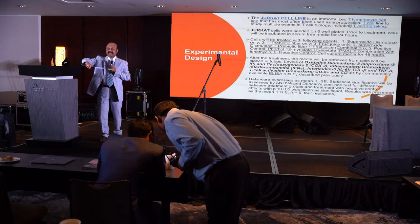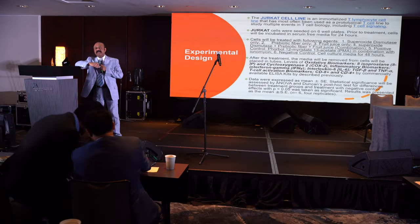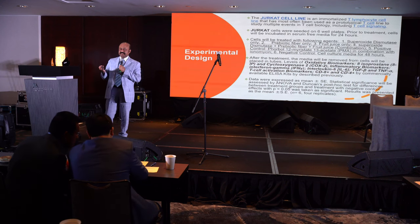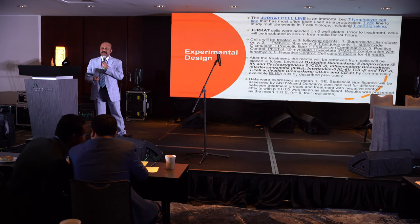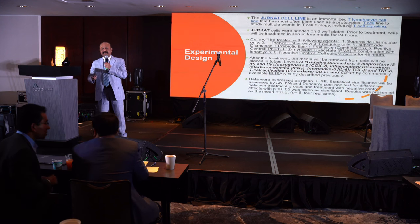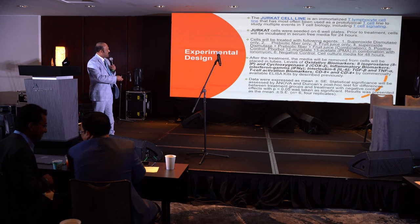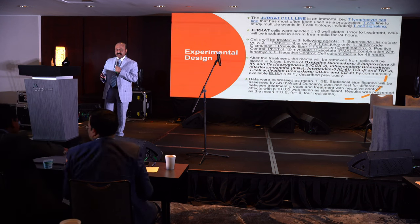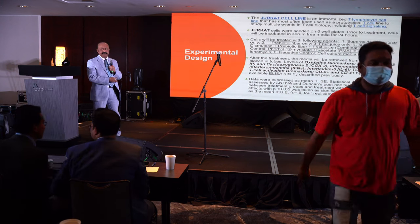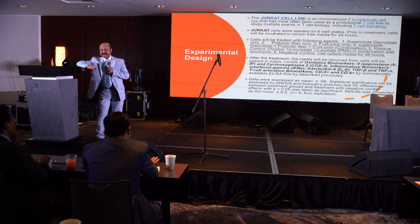I used the Jurkat cell line, which is the T cell line. In my lab, we induced these Jurkat cells with different concentrations of different components of the BB5 gel and the BB5 gel itself. We then measured oxidative biomarkers and anti-inflammatory biomarkers, and we also measured T cell differentiation — CD4 and CD8 cells.